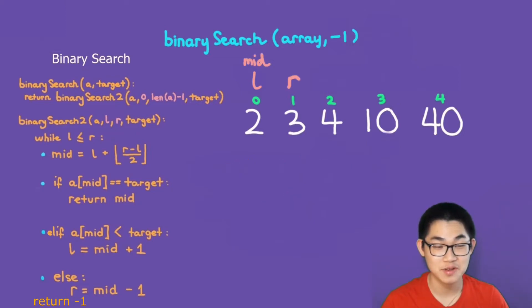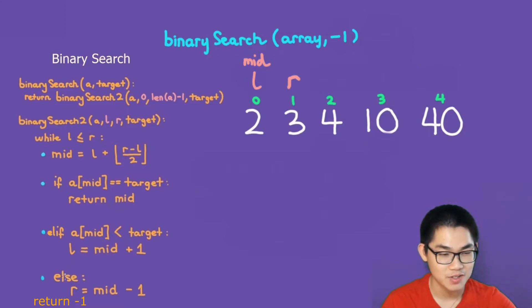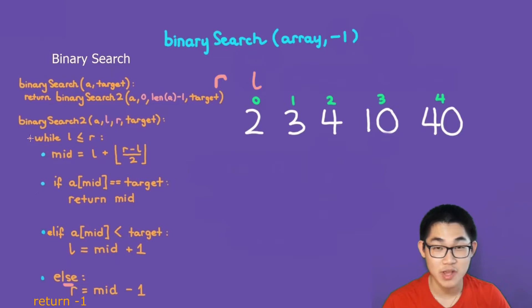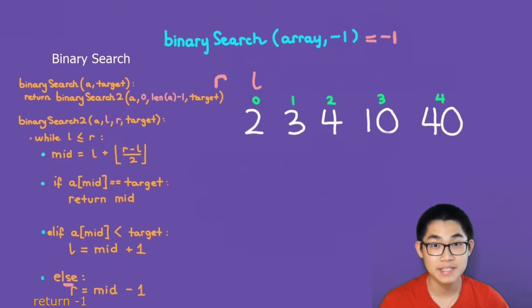There are three case scenarios. Array at mid is number 2. Is 2 equal to negative 1? No. Is 2 less than negative 1? No. So we move R to the left of mid. We no longer need mid. Finally, at the very top: is left smaller or equal to right? No, it is not. So negative 1 is not inside this array and we return minus 1. That completes the binary search.